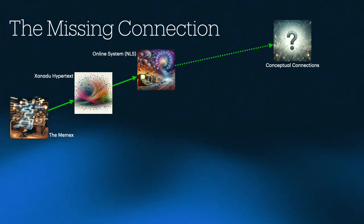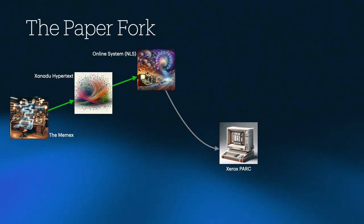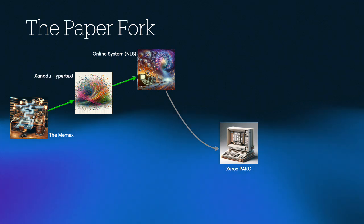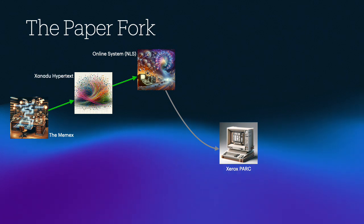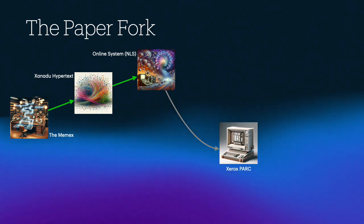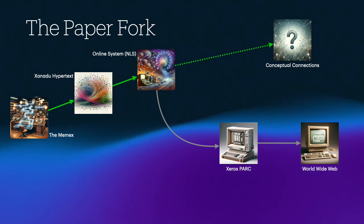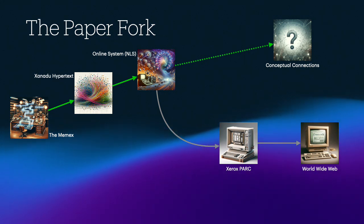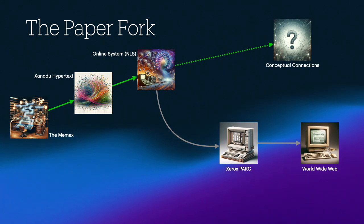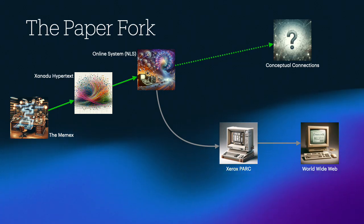Several of Engelbart's engineers joined Xerox's Palo Alto Research Center, or PARC, after the NLS system lost much of its funding. There, they found themselves working for a company whose primary business centered on paper. The computer that the teams at Xerox PARC developed, the Xerox Star and the Xerox Alto, had to make sense to that company. And so instead of a connection machine, they developed a paper organizing machine — a bigger and better filing cabinet, coupled with a typewriter and sketchpad. While Xerox never became a major player in the subsequent computer transformation, the ideas of the Xerox machines made their way onto new computers via the Macintosh and Windows operating systems.